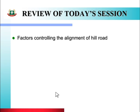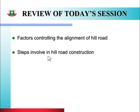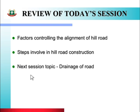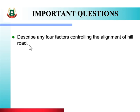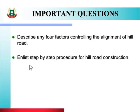In this way, in today's session, we studied about the factors controlling the alignment of hill road and the steps involved in hill road construction. In the next session, we will see the topic of drainage of road. The important questions on today's topic are: describe any four factors controlling the alignment of a hill road, and enlist the step-by-step procedure for hill road construction. You have to solve these questions as an assignment. If you face any difficulty, watch the video again, refer to the notes provided, or contact me.